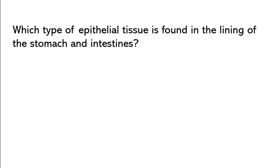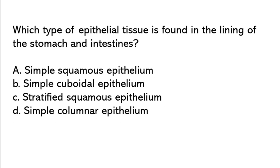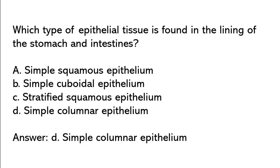Which type of epithelial tissue is found in the lining of the stomach and intestines? Simple squamous epithelium, simple cuboidal epithelium, stratified squamous epithelium, simple columnar epithelium. So the correct answer is option D: Simple columnar epithelium.